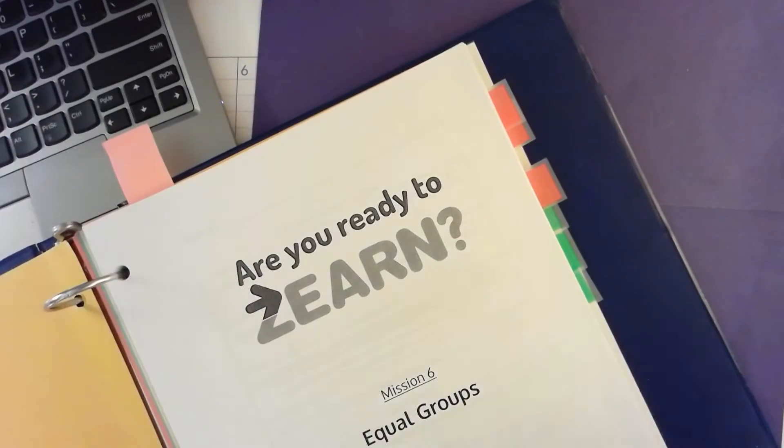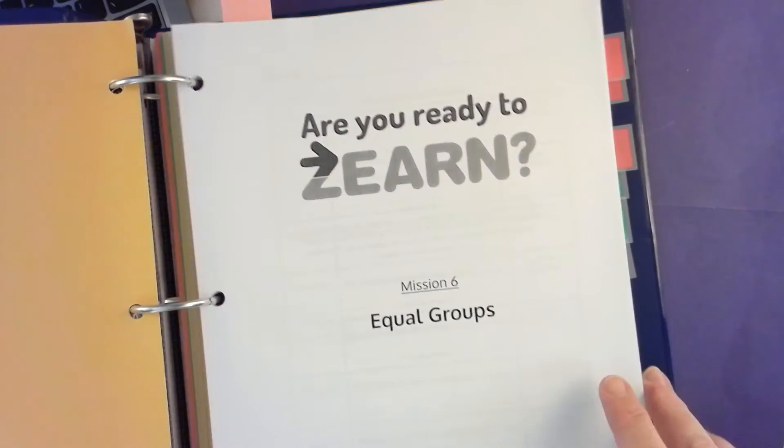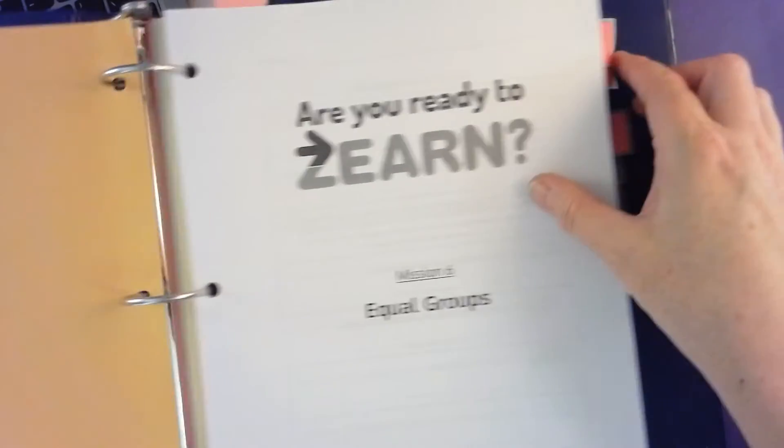This first tab is your equal grouping. I'm going to zoom out a little bit so you can see better. It's your equal groups, that's what we've been doing in our Zern. Then you'll have another tab here and that is another unit we're going to go into called multiply and divide friendly numbers.